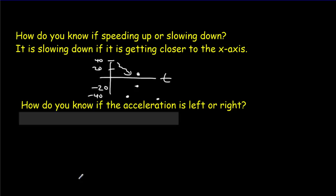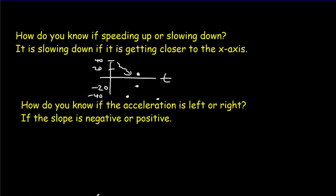How do you know if the acceleration is to the left? Well, remember, the acceleration was simply the slope. So, if our slope is negative or positive, that tells us if it's moving left or right. Negative slope would mean moving to the left.